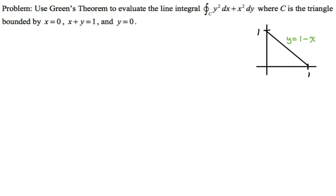I'm going to rewrite the line integral. We're going counterclockwise. You can do Green's theorem if you're going clockwise — you just get the negative of what you should get — but the standard assumption is counterclockwise. When you see that symbol with the little circle on the integral sign, it's telling you that it's a simple closed path or region defined by the curve, and you've satisfied the conditions of Green's theorem.